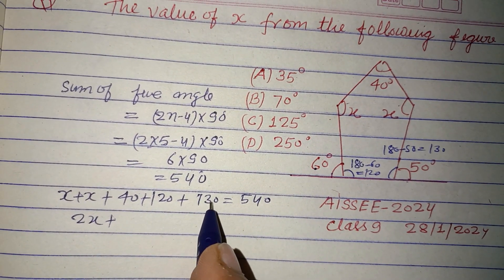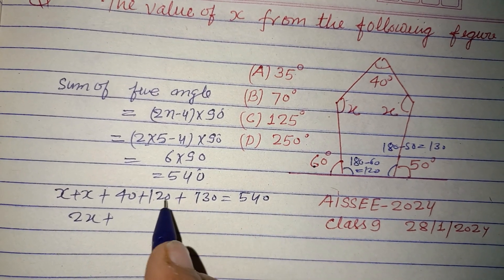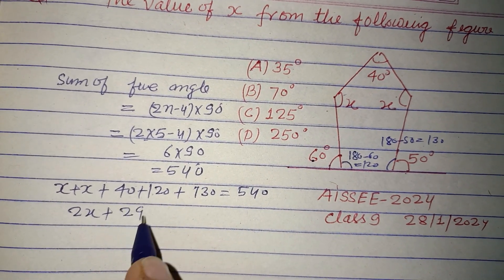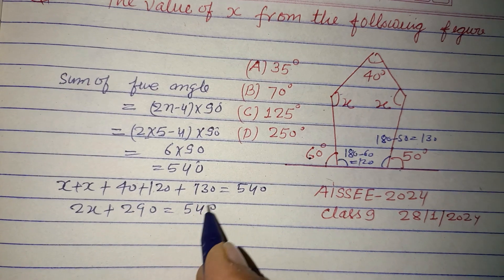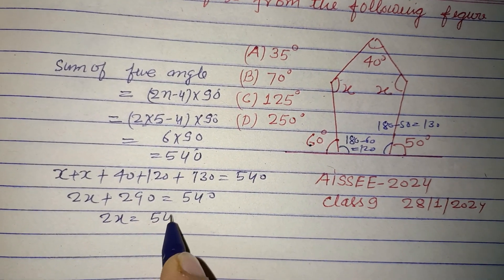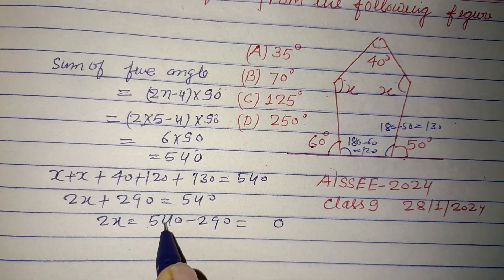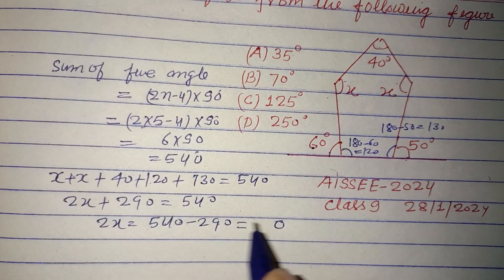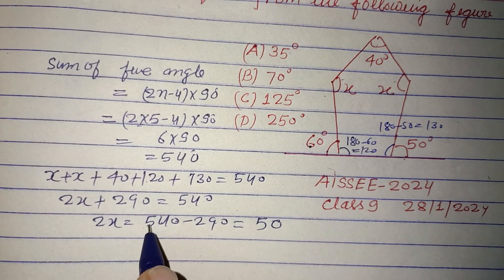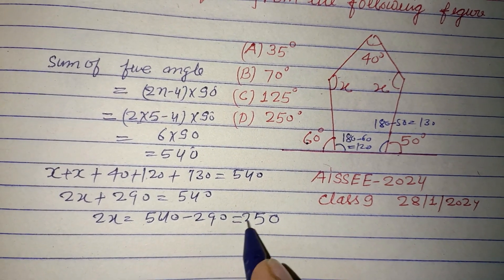Therefore, 2x equal to 540 minus 290. This is 540 minus 290, which is 250.